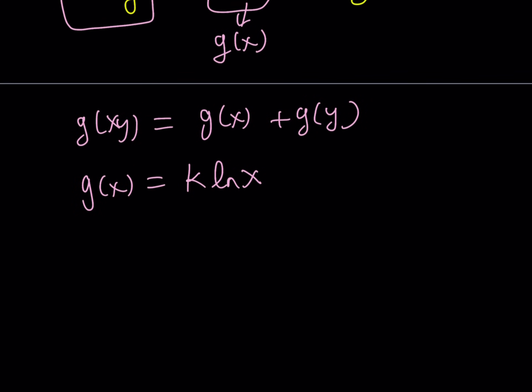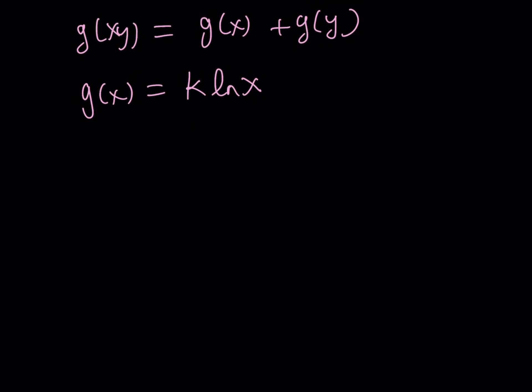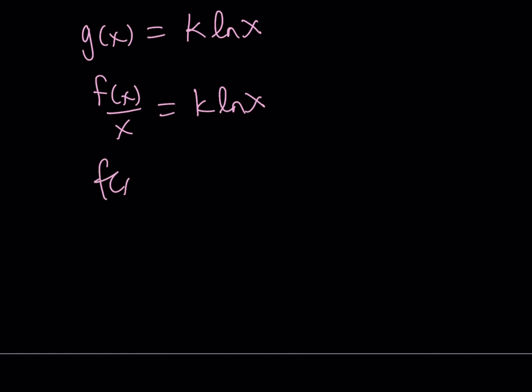So, since g(x) we already found, and we know that f(x) over x is g(x), so I can replace... Uh-oh. Notability acting up again. So, I can replace g(x) with f(x) over x. And we know that it's equal to k ln(x). From here, we find f(x) to be k times x times ln(x). Obviously, this also shows you that x should never be 0 because ln(0) is not real.